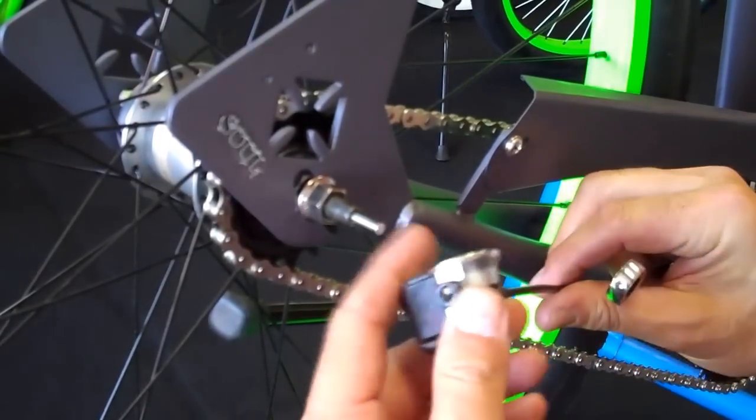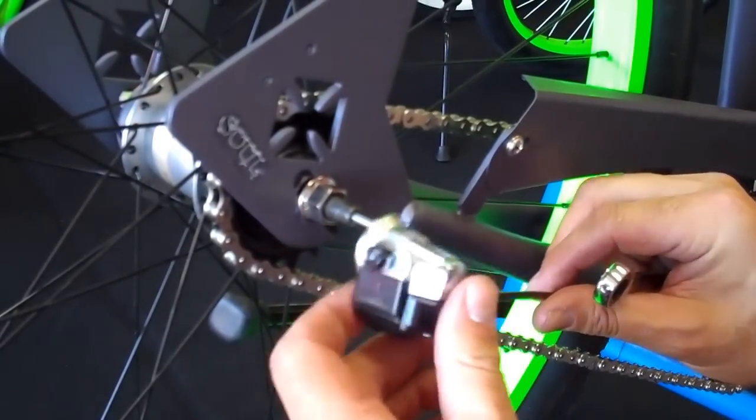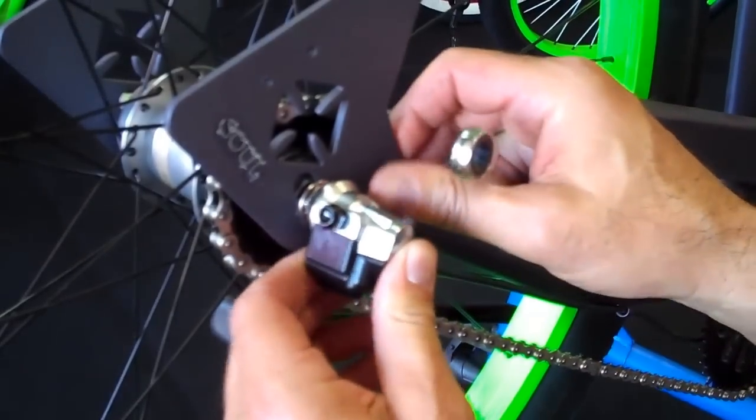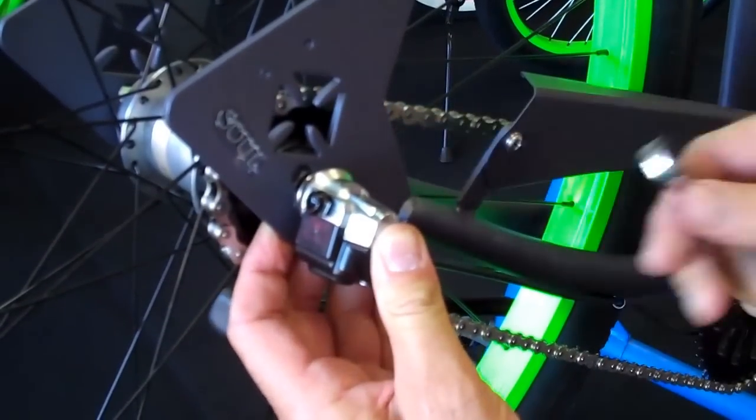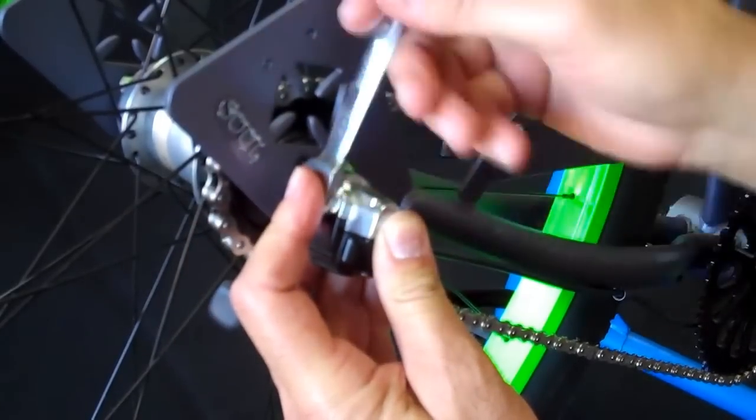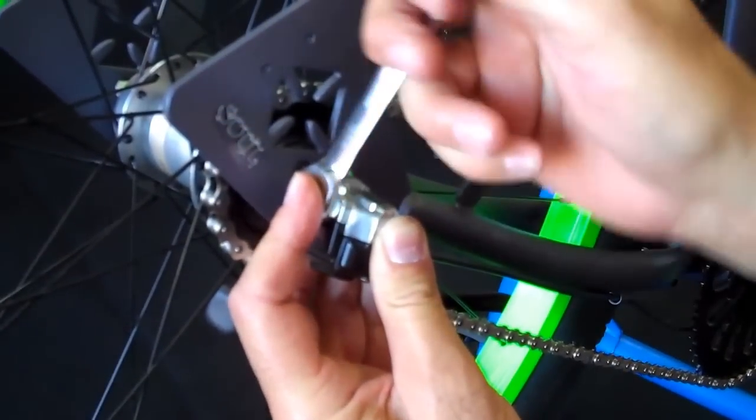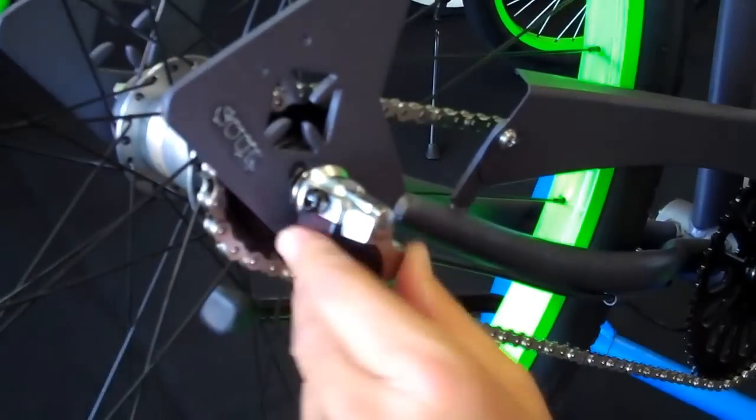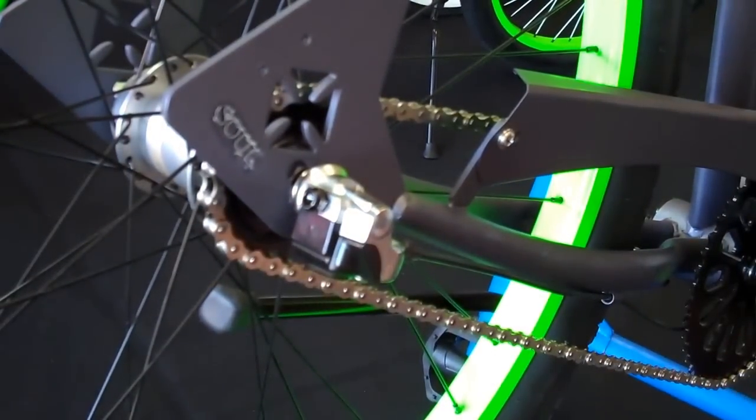From here, take the Nexus mechanical piece and slide it over all the way up to the axle nut, then tighten this on. Get it snug pretty good. Once we have this on, we're going to show you how to adjust it.